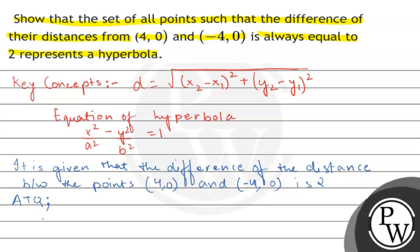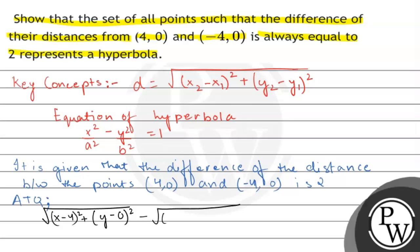According to the question: √[(x − 4)² + (y − 0)²] − √[(x + 4)² + y²] = 2. This is given in the question and according to that we will solve.